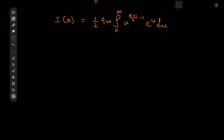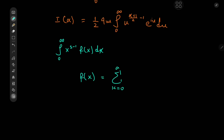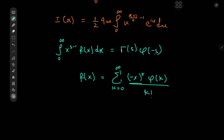And now for the star of our show: Ramanujan's Master Theorem. There's a link in the description for a proof, which is pretty much the same proof Ramanujan himself provided, although a superior proof is by G. H. Hardy. The theorem states that if the integral from 0 to infinity of x^(s−1) times f(x), where f has the series expansion: sum over k from 0 to infinity of (−x)^k times φ(k) divided by k factorial, then the Mellin transform equals Γ(s) times φ(−s).